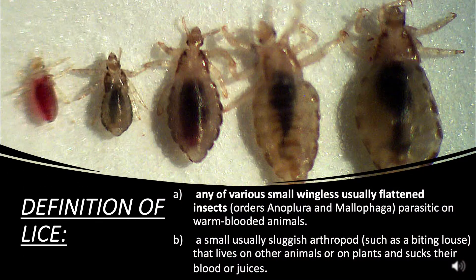Definition of lice: any of various small wingless usually flattened insects, order Anoplura and Mallophaga, parasitic on warm-blooded animals. A second definition: a small usually sluggish arthropod such as a biting louse, that lives on other animals or on plants and sucks their blood or juices.